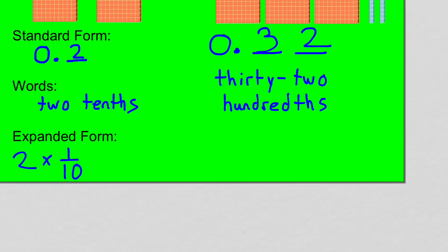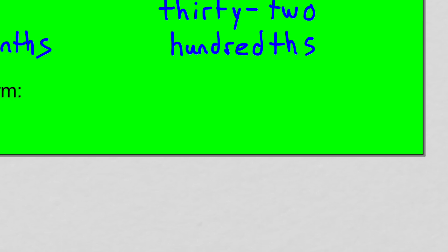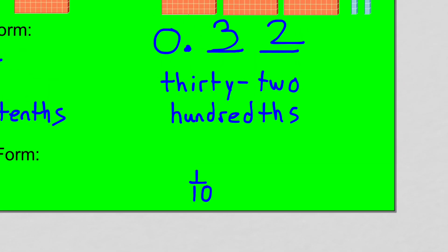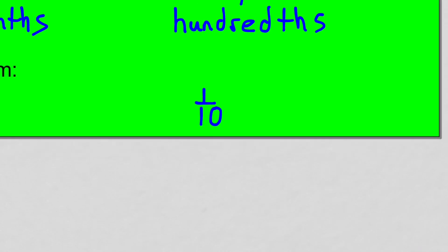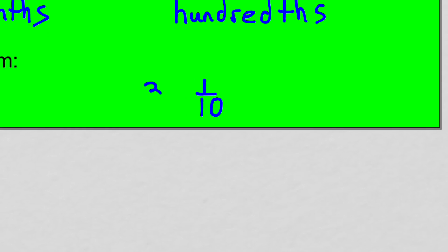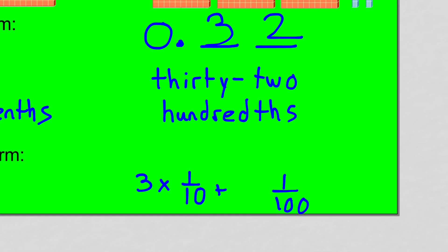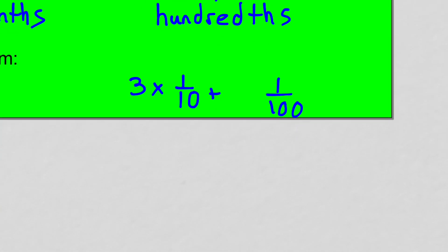For expanded form, I actually have two place values here. First, I have the tenths, and I have three of those tenths. So I'm going to say three groups of one over ten, or three times one tenth. Plus I have the hundredths place value as well. How many of those hundredths do I have? I have two of them. So I'll say two times one hundredth. There's my number in expanded form: three groups of one tenth, two groups of one hundredth.